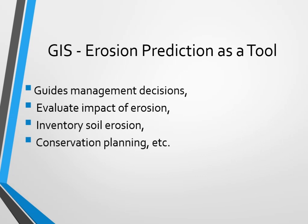GIS has potential for producing soil erosion assessments. GIS guides us in management decisions based on its output. We can manage and provide decisions. In addition, we can evaluate the impact of erosions — for instance, after estimating the sediment yield for hotspot areas of a watershed, we can evaluate the impact at watershed or basin level.